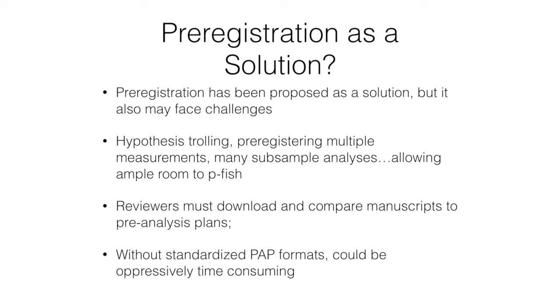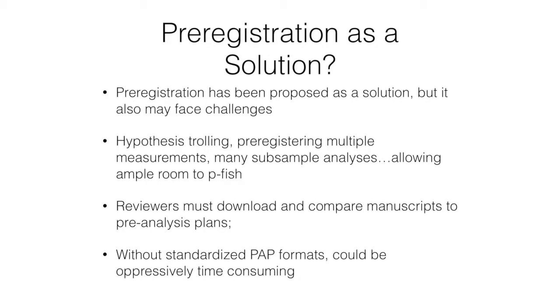With pre-registration, reviewers must download and compare manuscripts to pre-analysis plans — that's a big assumption, even if we can solve the problems of having journal editors coordinate with registries so that pre-analysis plans can be anonymized and provided to reviewers. The reviewer still has to go and read another document. Some pre-analysis plans can be four to seven times longer than the paper itself, raising real questions about whether reviewers will actually engage in this practice.